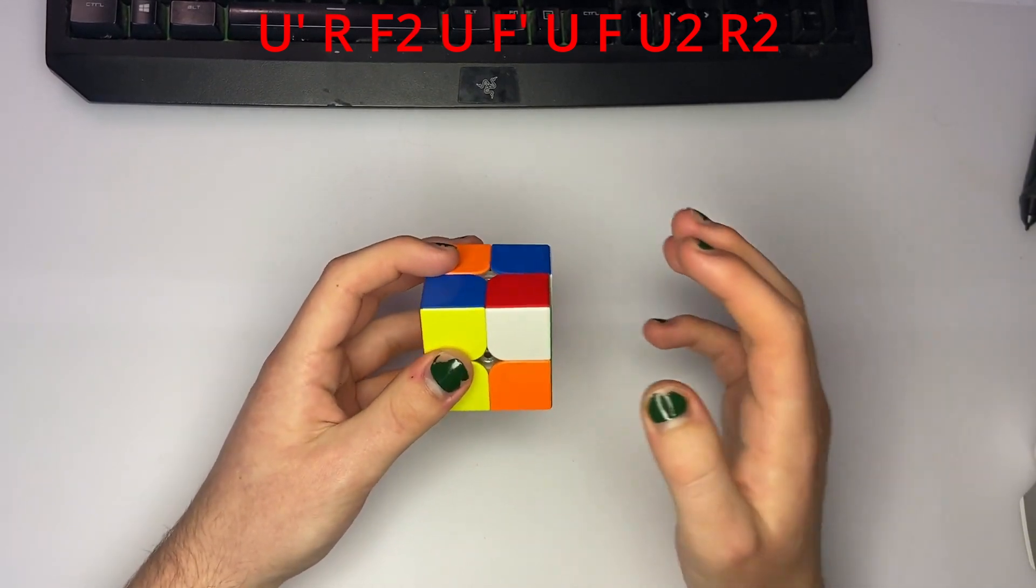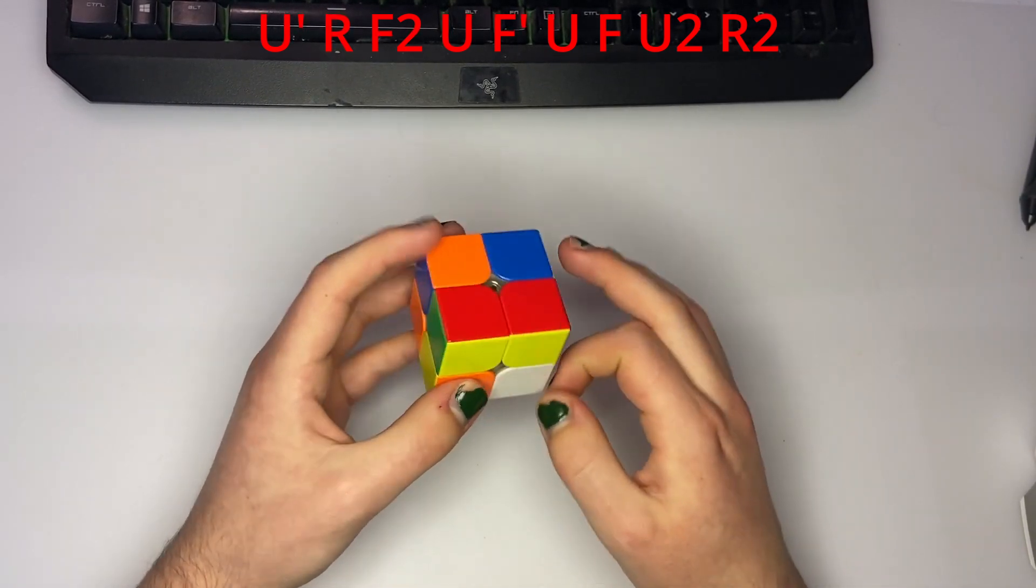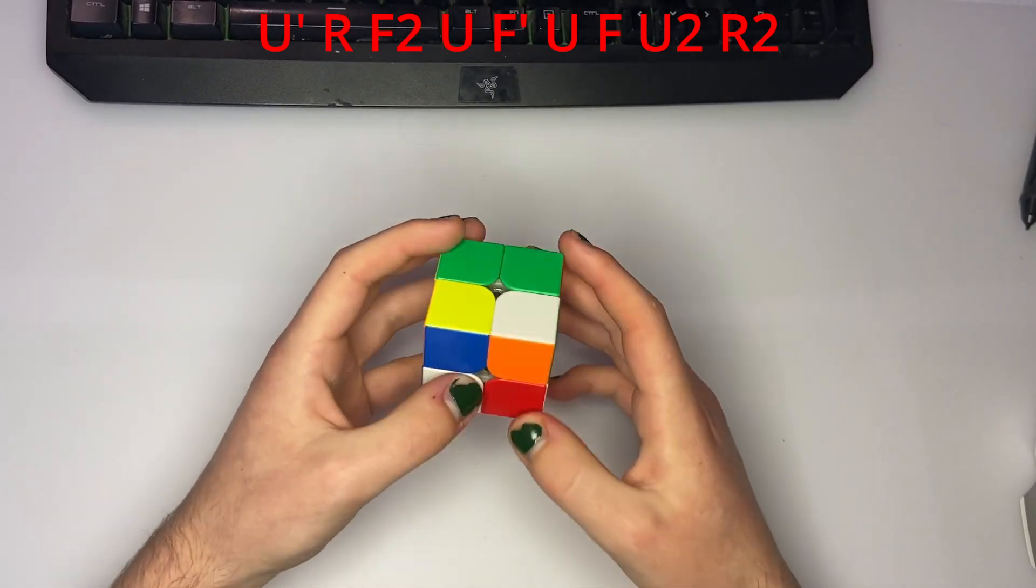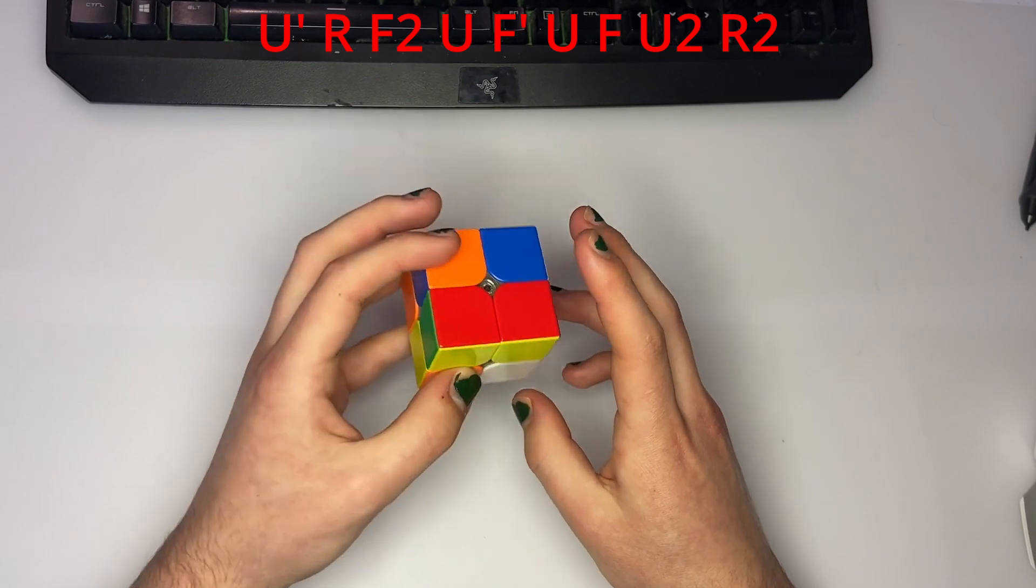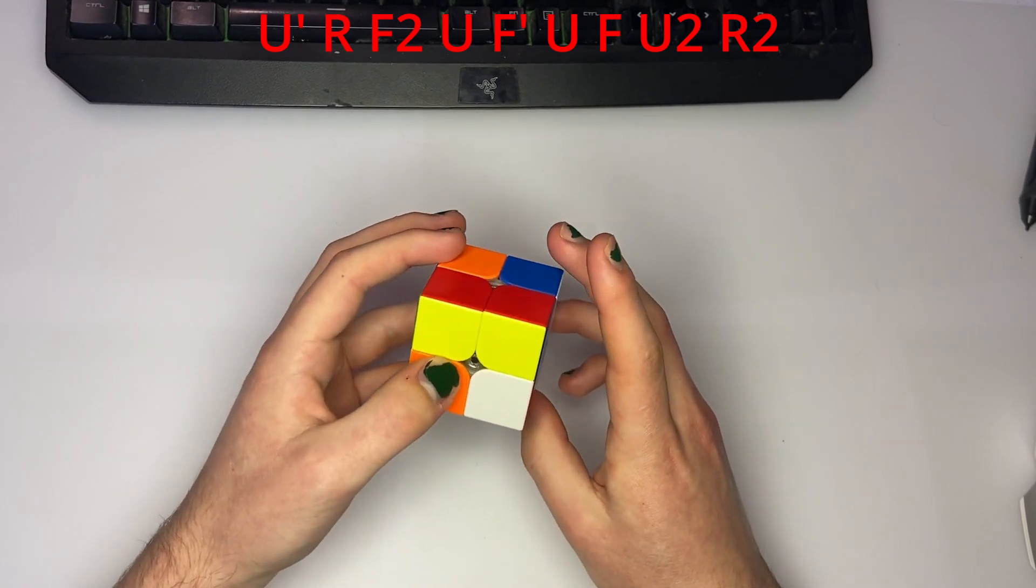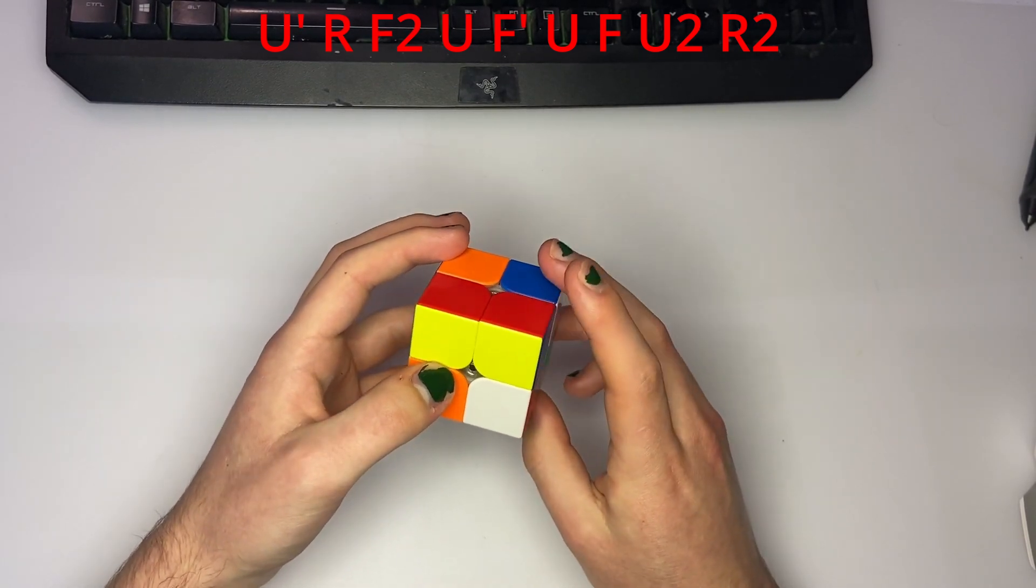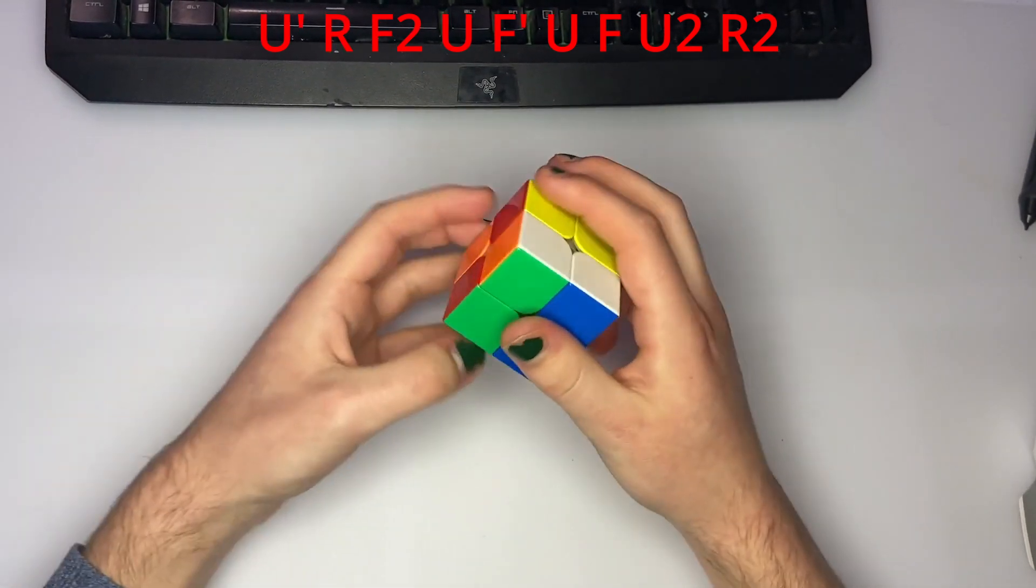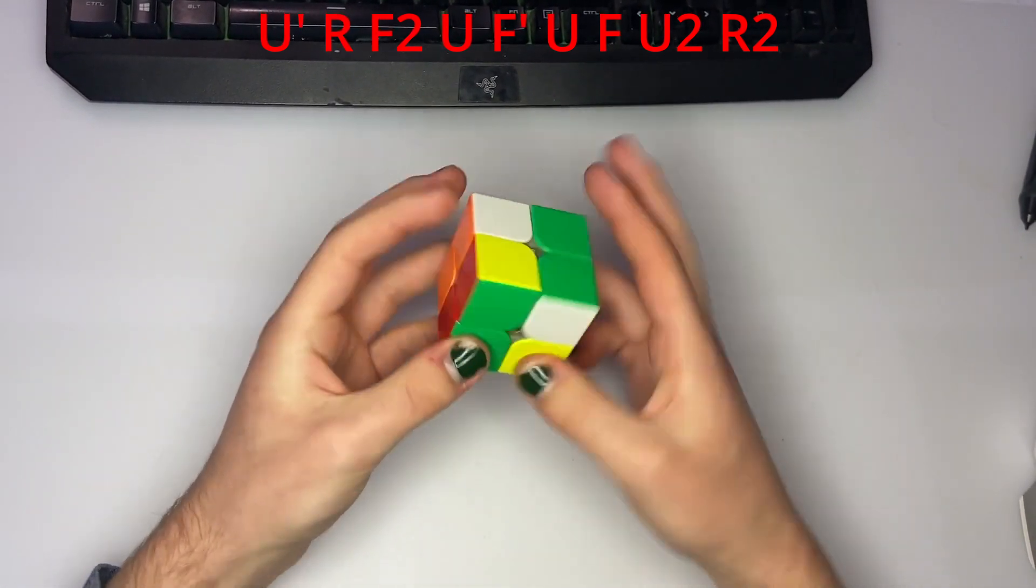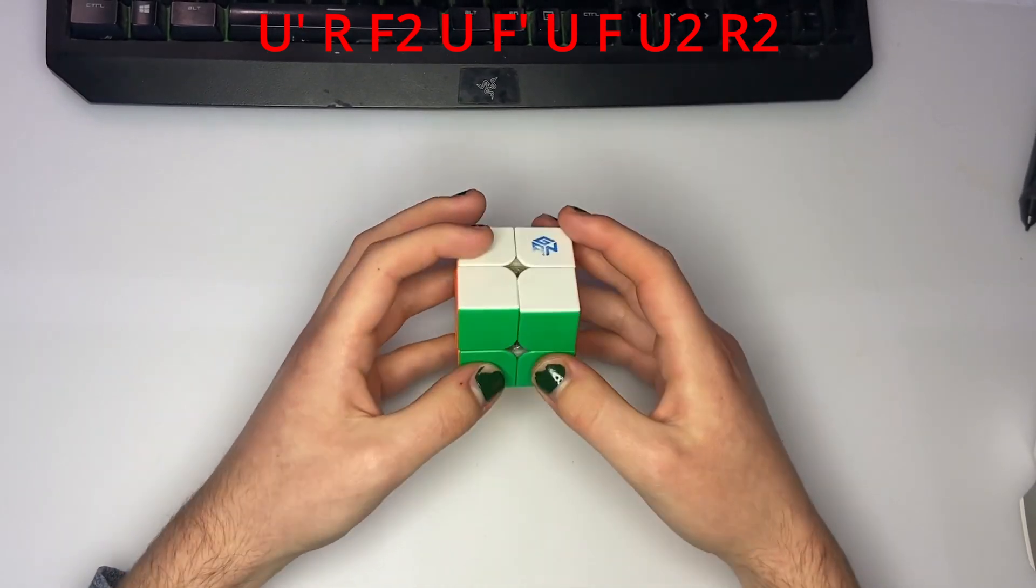So one solution you can do with this scramble is you can do an F to make this GEGLS, and then you can actually cancel into a 10-move solution. So you can do this alg. So it's very, very not finger trick optimized right now, but then you finish with U2, R2, F2, and that's a 10-move solution.